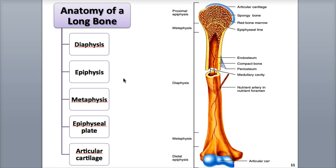The proximal and distal ends of the bones are called the epiphyses. The proximal epiphysis is closest to the point of attachment of the bone to the body — think proximal as approximate, which means closest to. The distal epiphysis is the end of the bone furthest away from the point of attachment — think distal as distant from. The epiphyses contain a type of bone tissue called spongy bone, which contains red bone marrow. The areas between the diaphysis and epiphyses are called the metaphyses, and they form what we call the neck of a long bone.